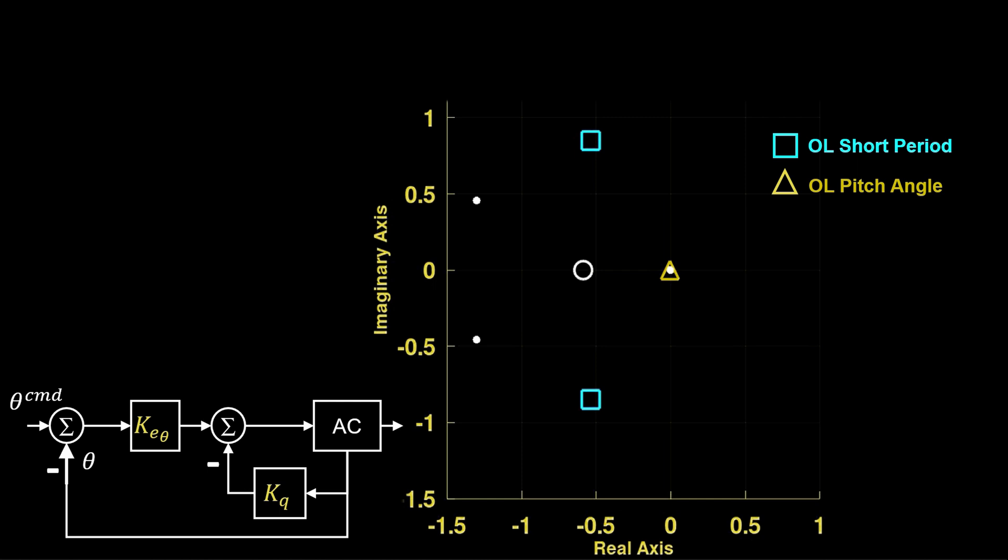We've applied a gain of minus 150 to KQ in the pitch damping loop. The damping effect to the short period is clear, moving the poles leftward and closer to the real axis.